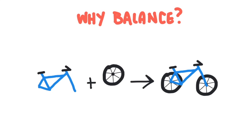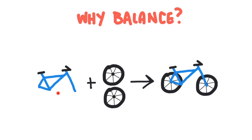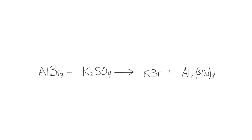Let's break this down with a simpler example — an equation for building a bicycle. When we combine a bicycle frame and wheels we end up with a bicycle, but notice we've suddenly added an extra wheel that wasn't on the left side. This is called the skeleton equation: it only shows the pieces and the product, it's not completely balanced. To balance it, we add the extra wheel, and now we have a balanced equation showing that one frame plus two wheels gives a complete bike.